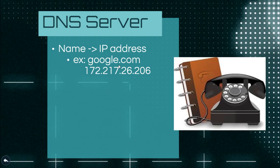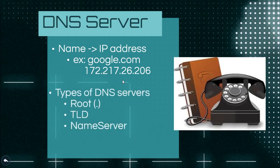There are hundreds of websites, and you can find your IP address through DNS. There are three types of DNS server classifications. The first is the root server, and the second is the TLD — the top-level domain.